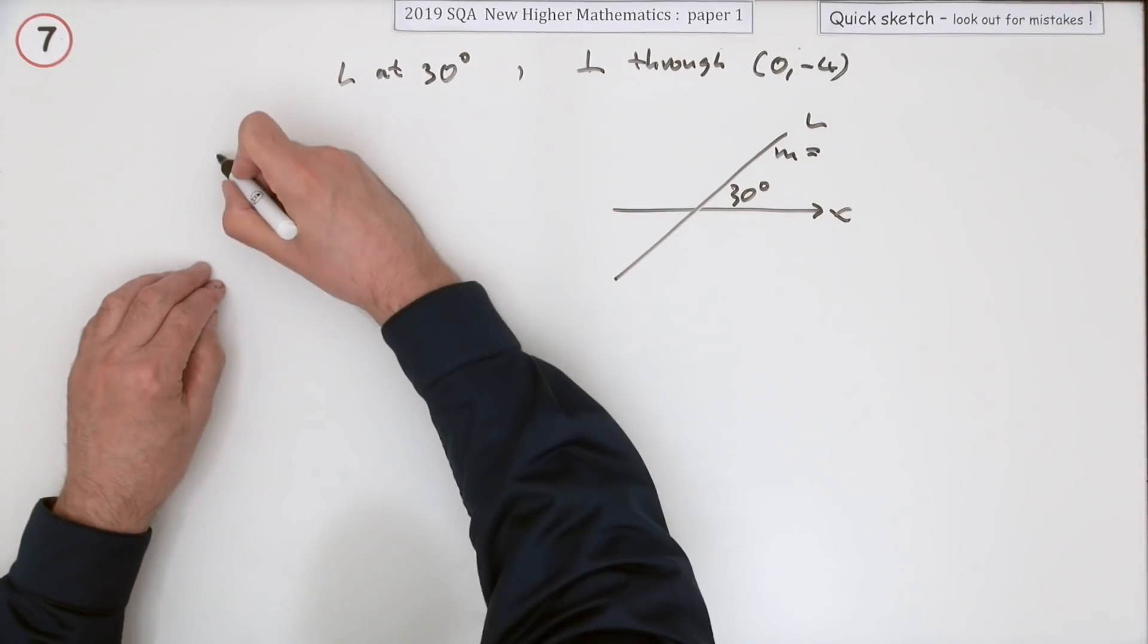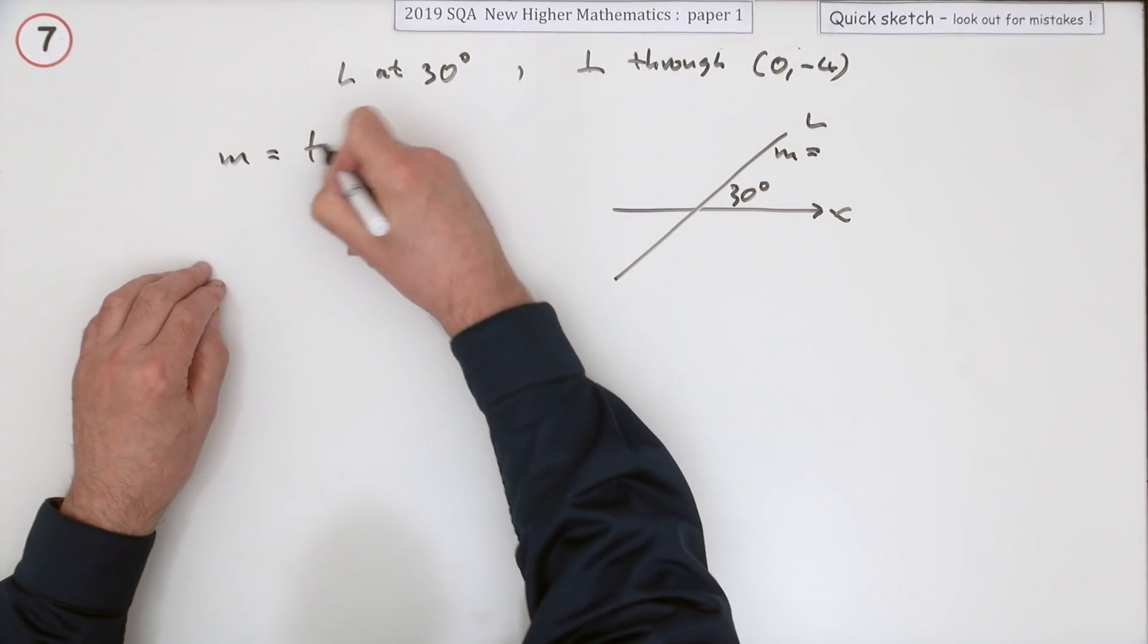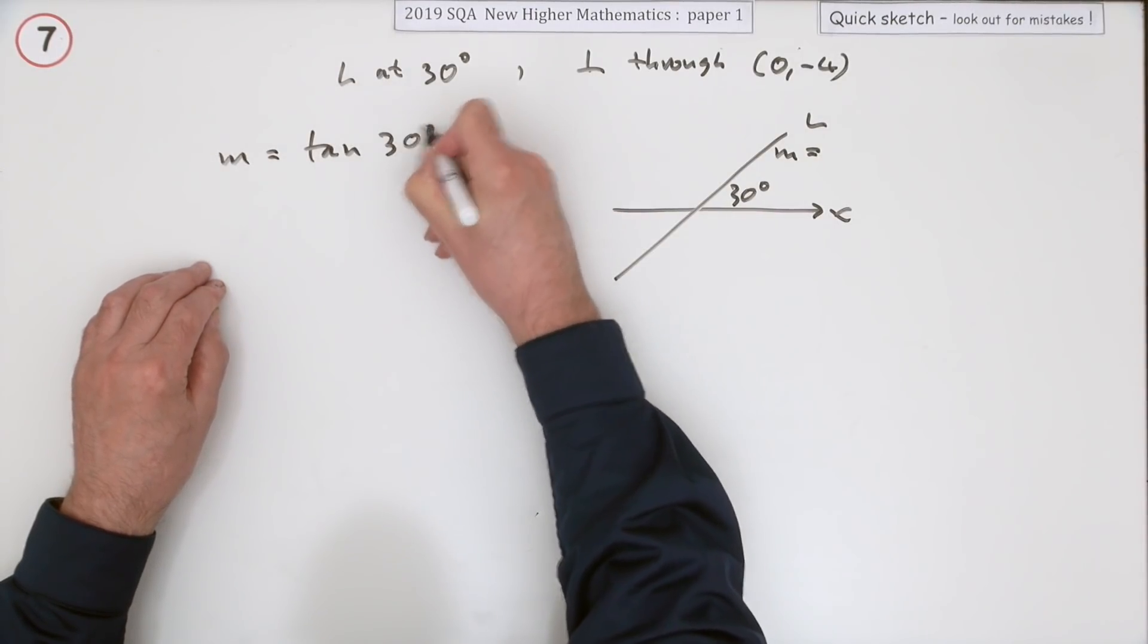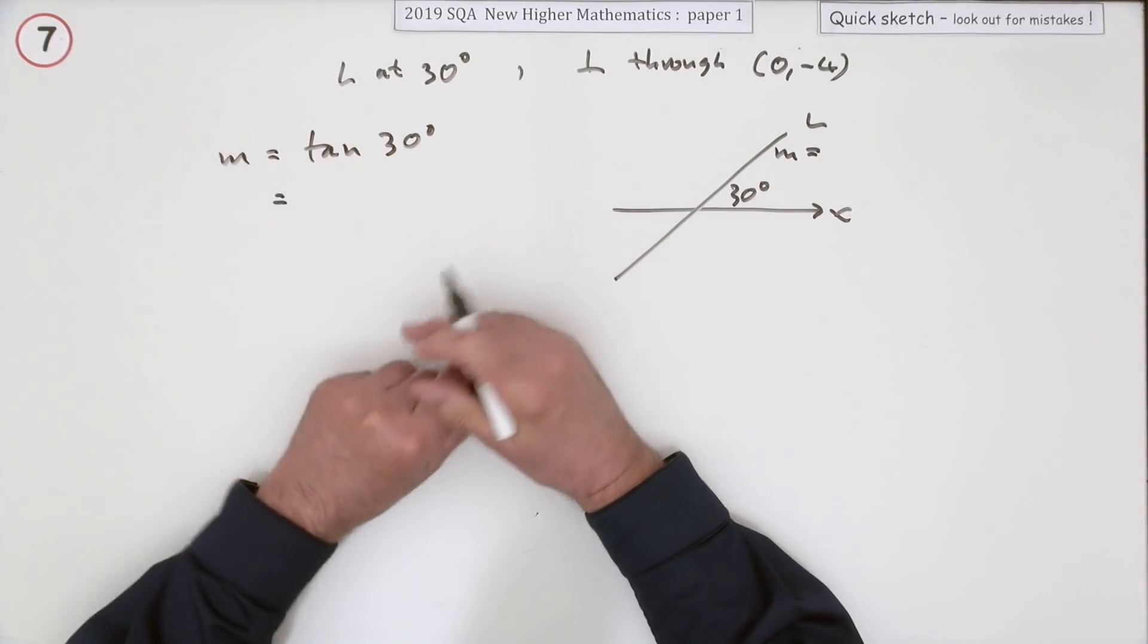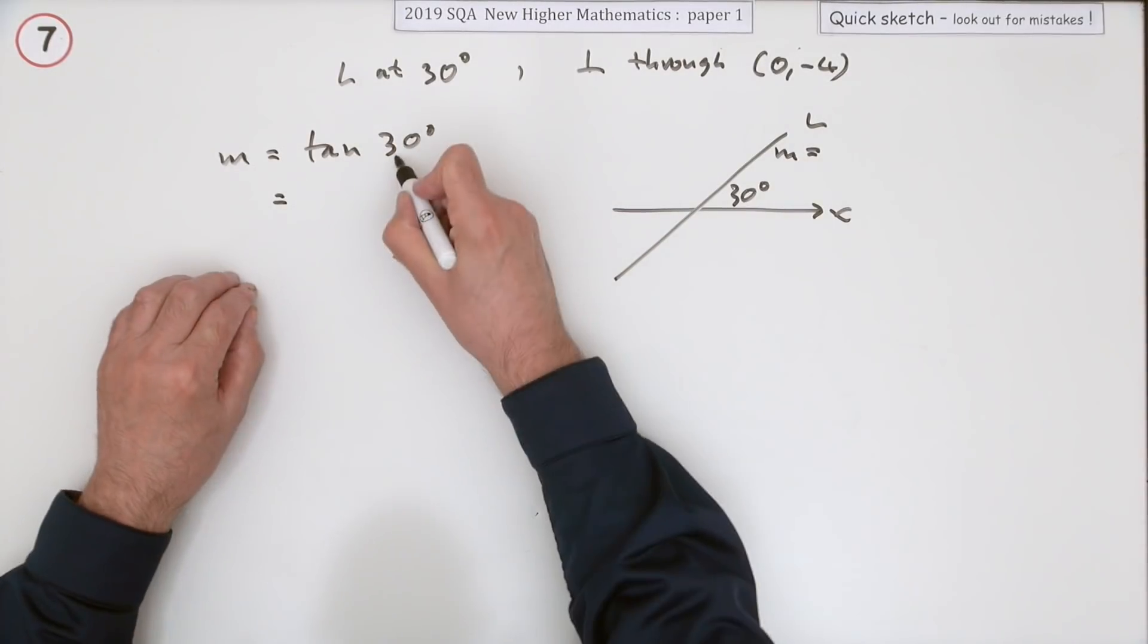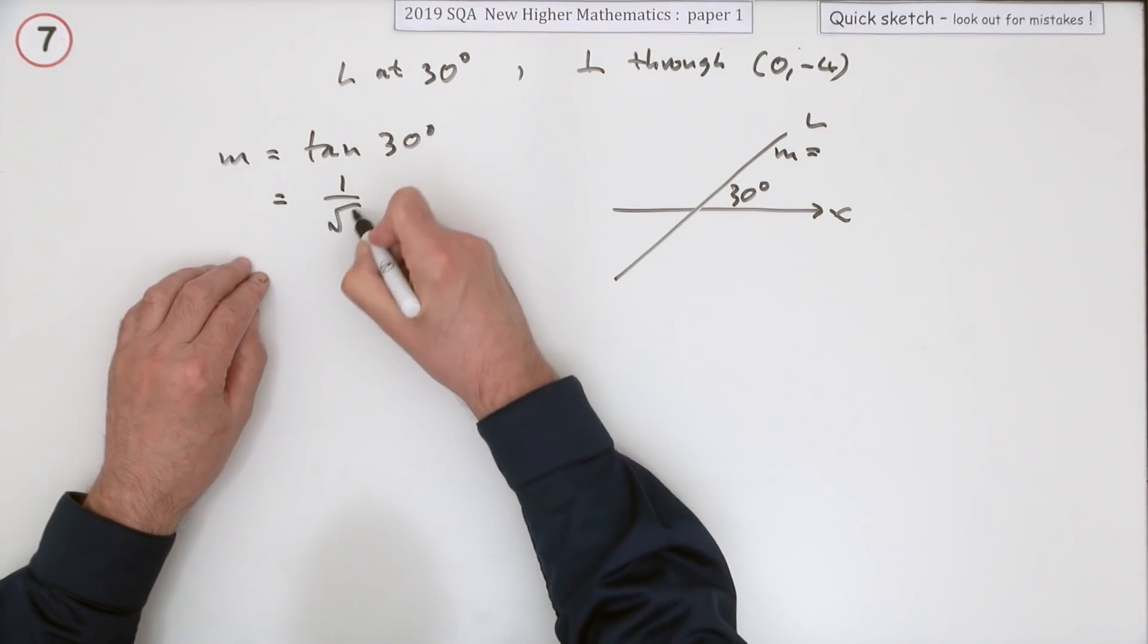So the first step would be this: what's the gradient of that line? It'll be the tangent of the angle - that's what you're meant to know. You should have learnt that one. The tangent of 30 is 1 upon root 3.